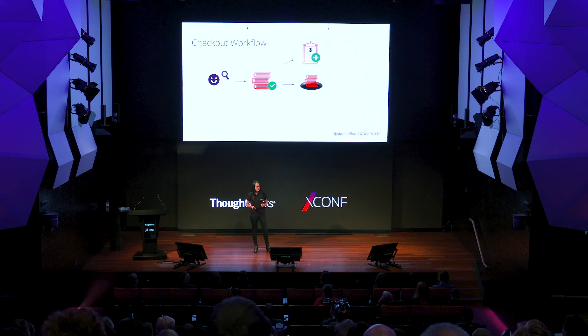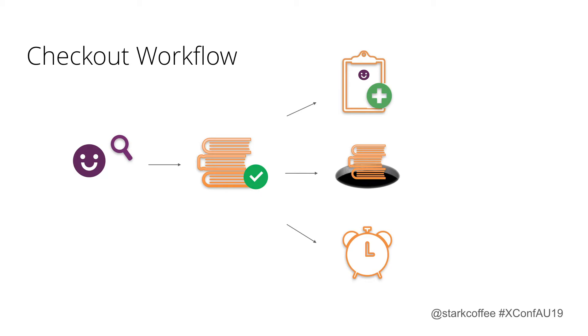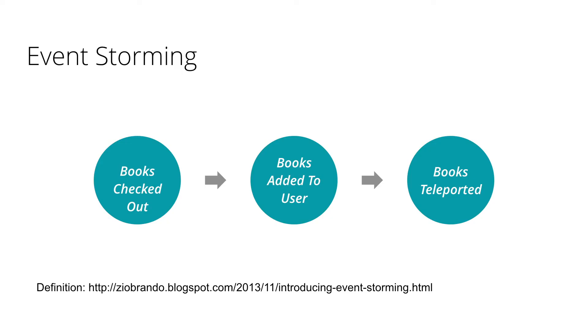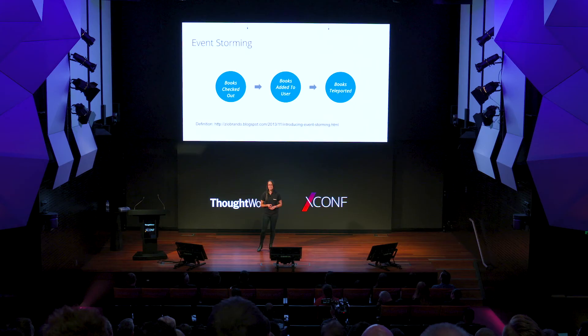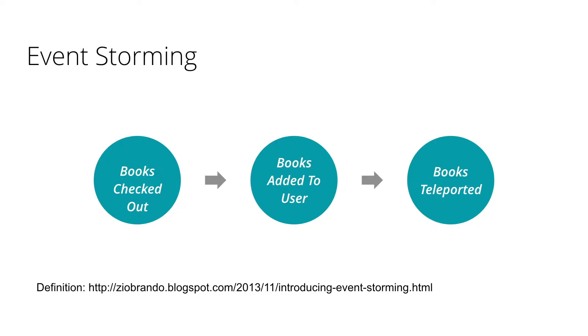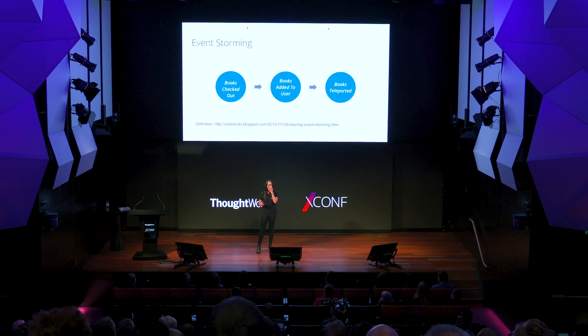This is probably a good fit for an event-driven architecture because the workflow is composed naturally of stages that can be represented as events. We can also think of extending the workflow — for example, a reminder service that reminds users when their books are due. If we're going to do this in an event-driven way — events first — let's define them. A nice technique is event storming, coined by Alberto Brandolini. For our checkout workflow we have: books checked out, books added to user, and books teleported.